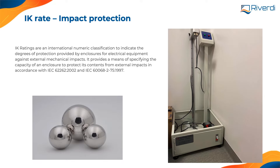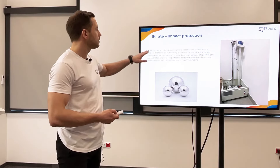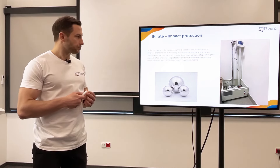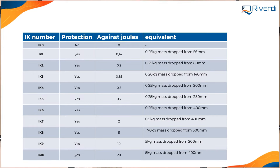Now we will talk about mechanical impact. Different from the surface hardness we talked about — the Mohs scale for surface hardness and anti-scratch — here we have the test and the scale for mechanical strength of the glass: how much energy we can put on the glass before it breaks. This is measured in IK rating. IK rating is basically a scale where we have different levels and different energy.